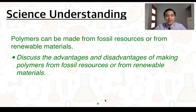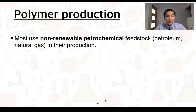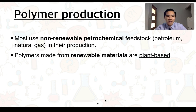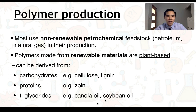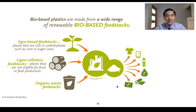For the next science understanding: polymers can be made from fossil resources or from renewable materials. You'll need to discuss the advantages and disadvantages of each. Most polymers are produced using non-renewable petrochemical feedstock, including petroleum and natural gas. Polymers made from renewable materials are generally plant-based and can be derived from carbohydrates, proteins and triglycerides. In this image we can see the different types of materials that can be used to produce these renewable polymers, which we typically refer to as biopolymers.